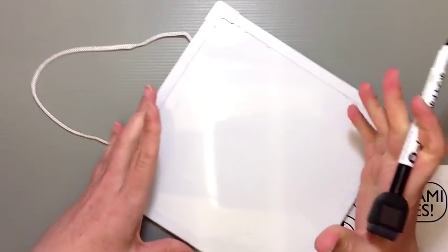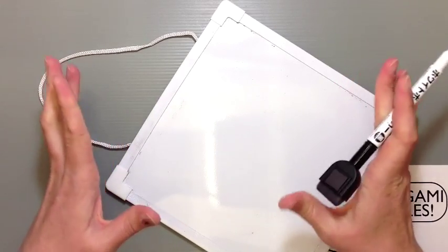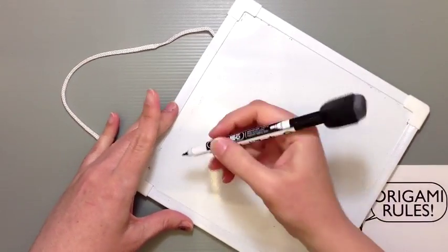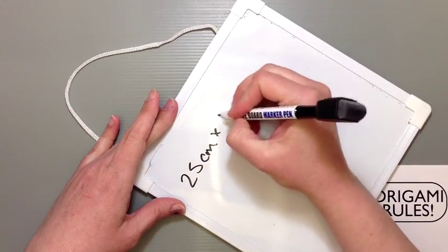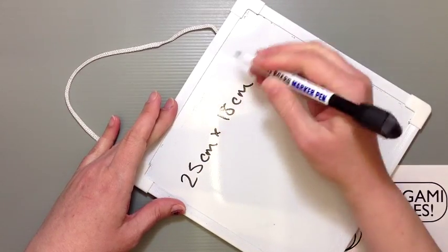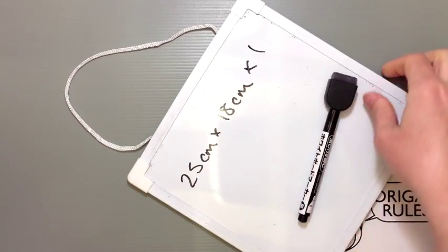This particular origami works really good with rectangular shapes, so you don't want to use just a square piece. That won't work so well. I'm using paper that's about 25 centimeters by 18. This is just a rough estimate, but I'll let you know the dimensions when we're done.